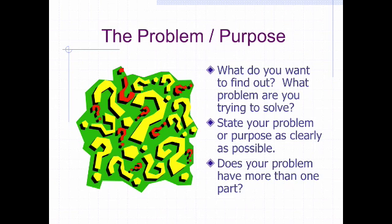The first step of the scientific method is to identify a problem or a purpose. Before we do any sort of research, we have to find out things like, what do we want to know? What problem are we trying to solve? Like, why is the sky blue? We want to state our purpose as clearly as possible. Because without it, a lot of times we may waste a lot of time on research. Does our problem have more than one part? How many different problems or hypotheses might we have to address in order to solve our problem?